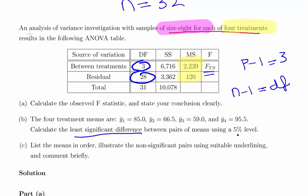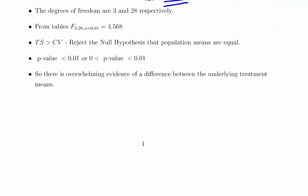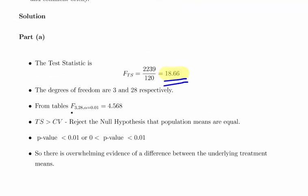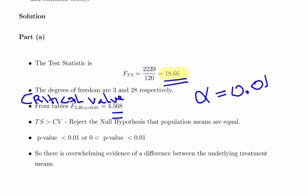And using a 5% significance level, or 1% significance in this particular instance. So if you want to use tables, the test statistic for alpha equals 0.01, the critical value here from the tables 3, 28, and alpha level of 0.01, that will give us a critical value of 4.568. Now you can immediately tell that really whatever significance level you're going to use, this is still a very high test statistic. So the test statistic is greater than critical value. We reject the null hypothesis that the population means are equal, so the p-value is going to be really low basically. There's overwhelming evidence of a difference between the underlying treatment means, so they're a good bit different from each other.